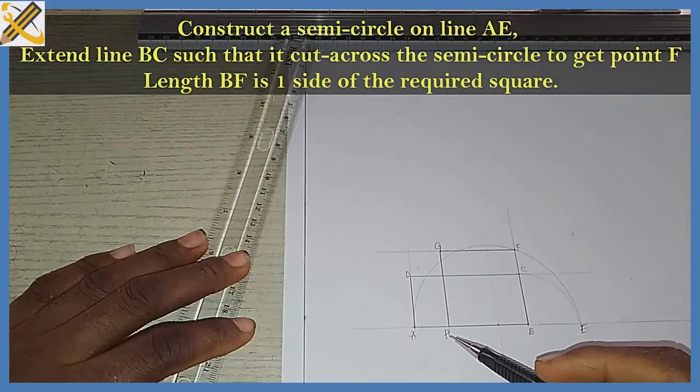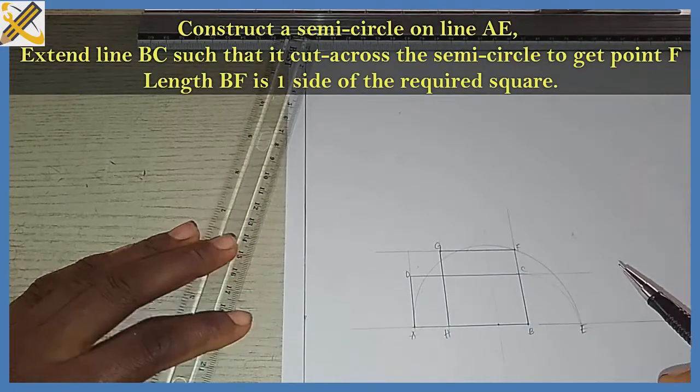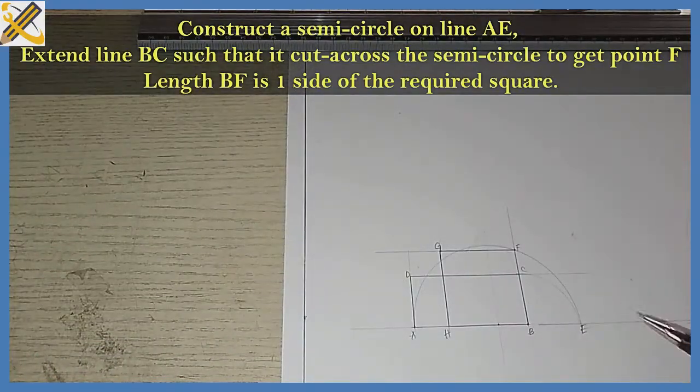So the part HBFG is the required square which is equal in area to the given rectangle. Thank you.